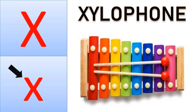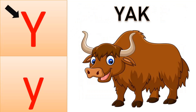And this is capital X. This is small x. X for xylophone. X-Y-L-O-P-H-O-N-E. Xylophone.